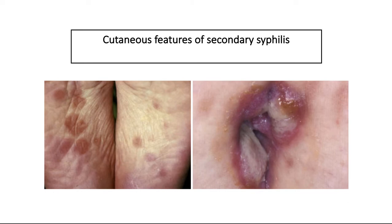Patchy hair loss can occur. Mucosal surfaces, such as inside the mouth, throat, genital area, vagina, and anus, can become raw and red. Gray-white moist plaques occur in the groin, inner thighs, armpits, umbilicus, or under the breasts. These are called condylomata lata, as shown on the picture on the right.